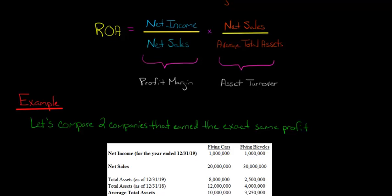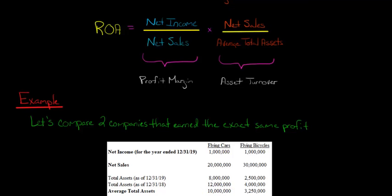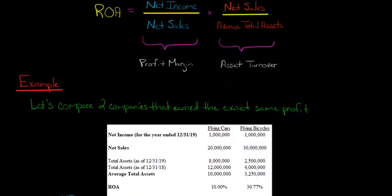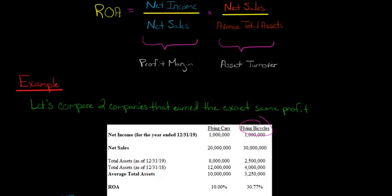For average total assets, we take the total assets for each of the last two years. For flying cars, that's $8 million plus $12 million divided by two, giving average total assets of $10 million. We do the same for each company. Flying cars' ROA is $1 million divided by $10 million, which is 10%. Flying bicycles' ROA comes out to 30.77%.